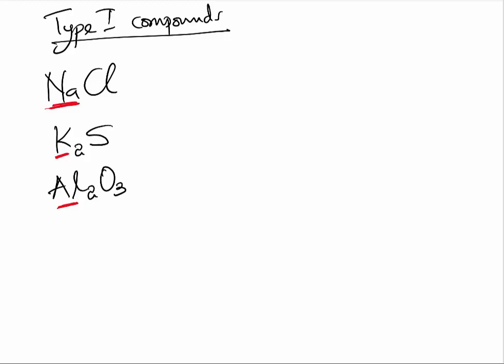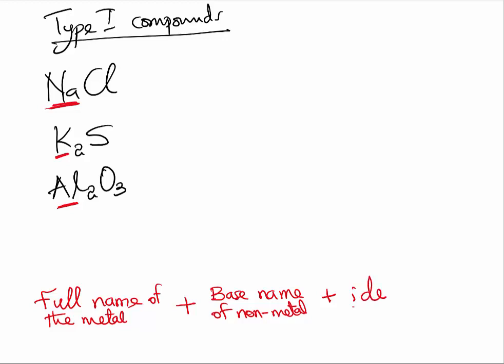So the question then is, after identifying the type of compound you are dealing with, how do you name it? The format for naming Type 1 compounds is very straightforward. You will write the full name of the metal in the compound, then you will write a little part of the name of the non-metal which is called the base name of non-metal, then you will ensure that you end the name with IDE.